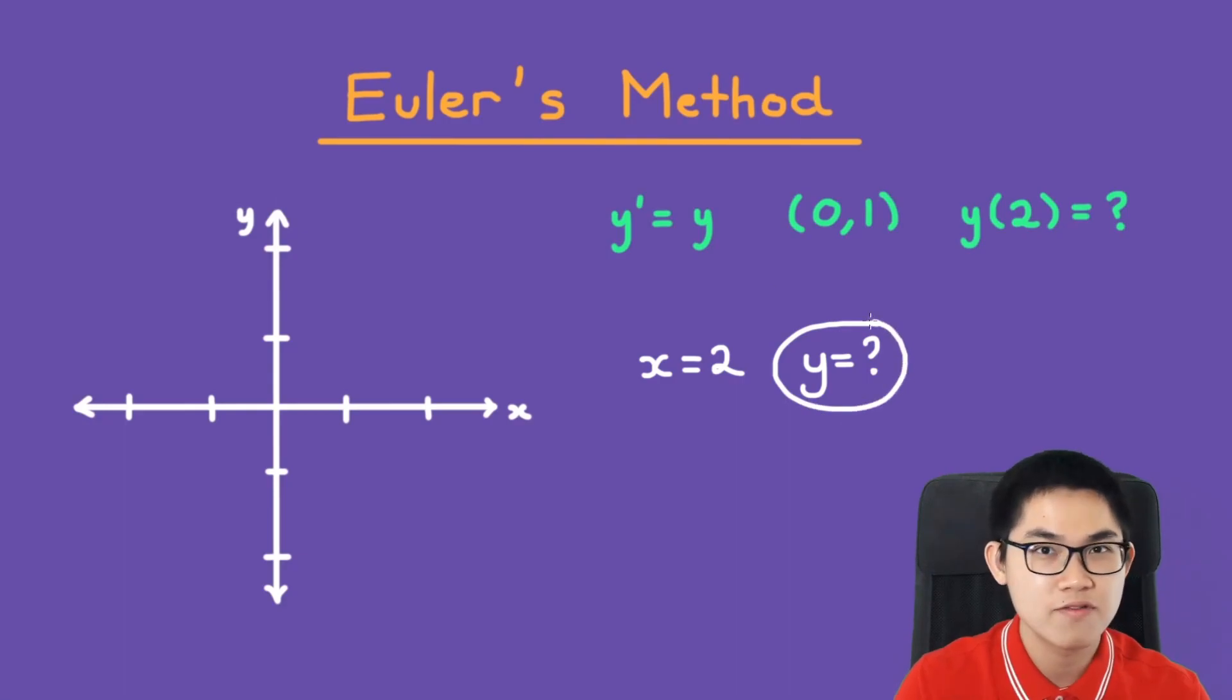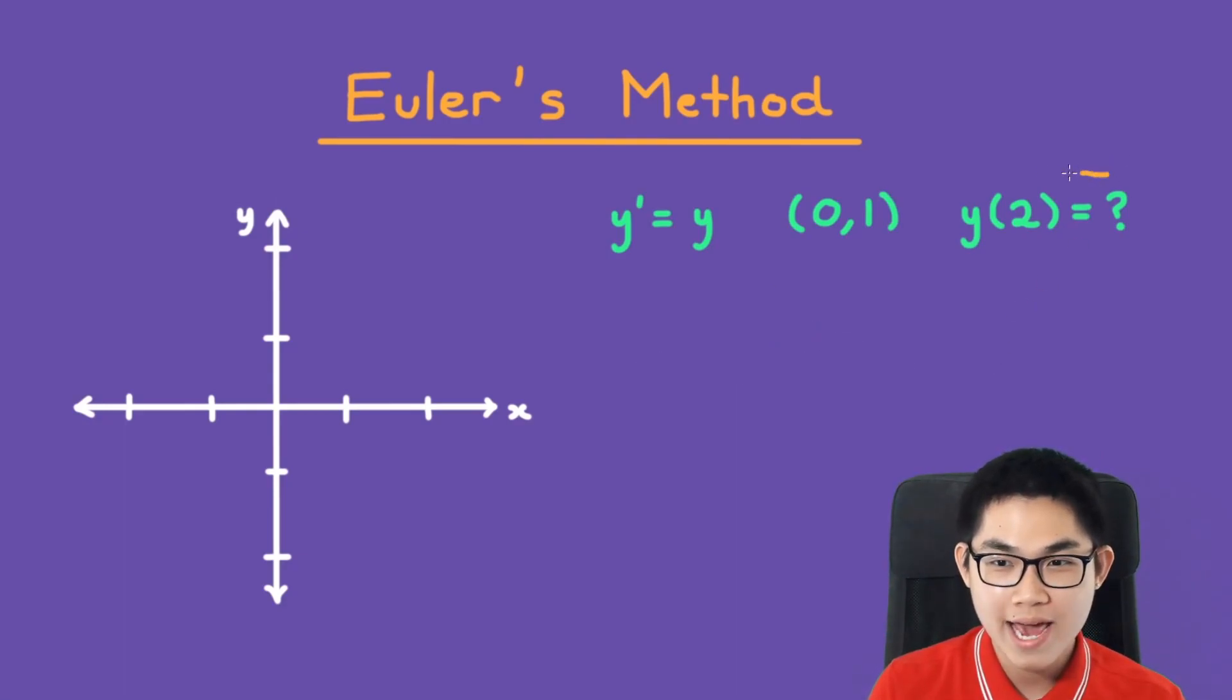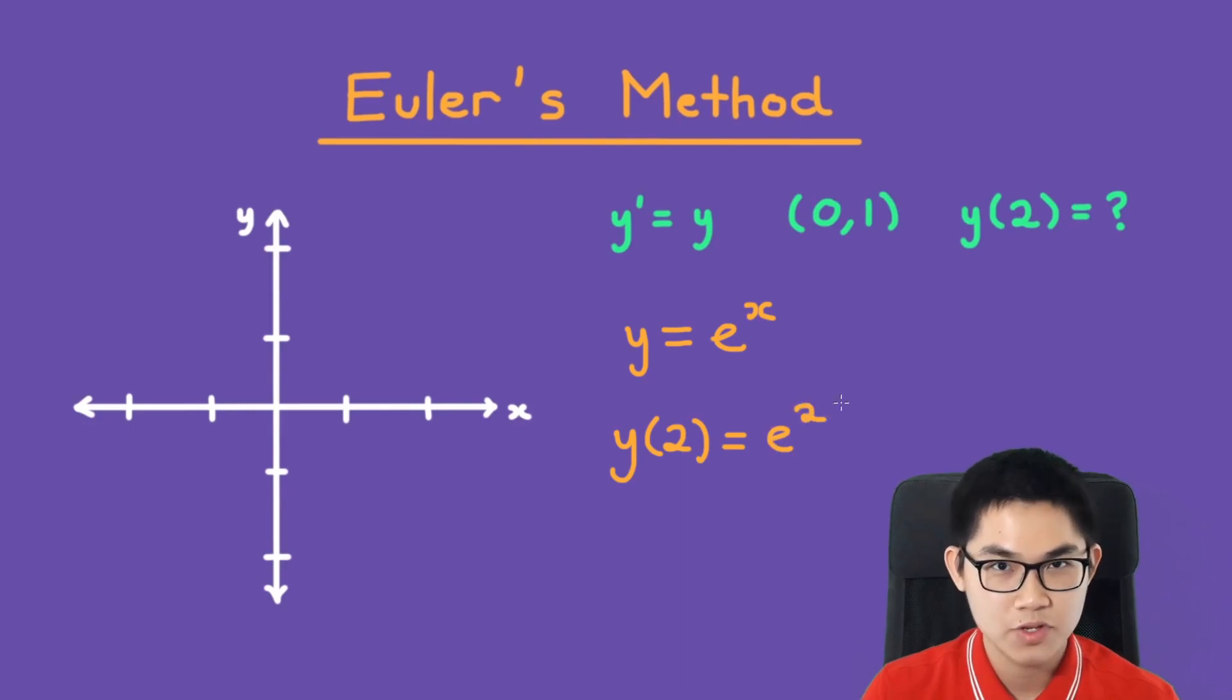And it's actually very simple. One way to find y at 2 is to solve for y. And sometimes that's not possible because some differential equations are very hard to solve. But let's say you're able to solve for y and you get y is equal to e to the power of x. Then y at 2 is equal to e to the power of 2. But like I said before, sometimes it's not possible to find this function. So that's when you have to use Euler's method.